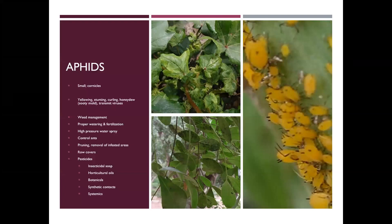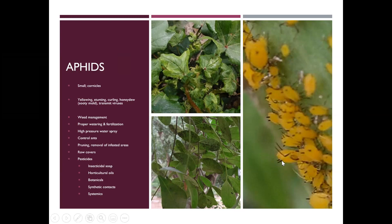Aphids are probably one of the number one garden and landscape pests. These are going to be small insects that come in a variety of colors. Some of them are going to have wings, some don't — it just depends on which ones you're talking about. The key to aphids is that they have two little tailpipe-looking things that come off of the tip of the abdomen.